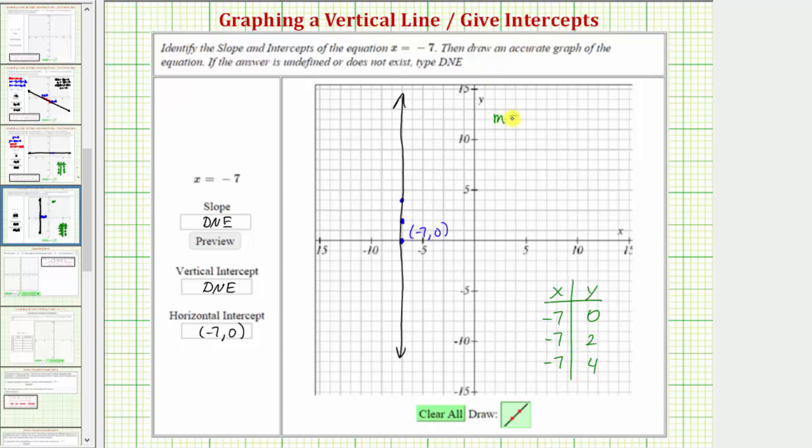We know the slope of a line is equal to the ratio of the change of y to the change of x, which would be the quantity y sub two minus y sub one divided by the quantity x sub two minus x sub one.